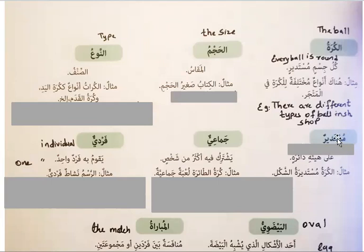The next word is Mustadirun, which means round or round in shape. Then we have Jamayyun. Jamayyun means collective — it could be team, group, or get together. Next is Fardiyyun. Fardiyyun means doing some activity individually. Some games can be played alone, individually. So that is Fardiyyun.